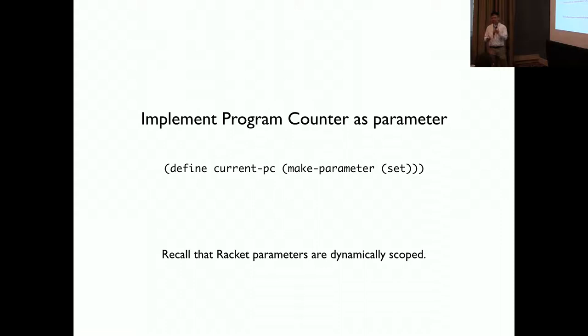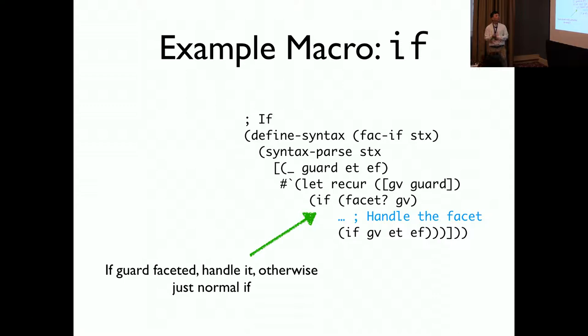We also implement program counter as a parameter. Basically, we parameterize the program counter so that it's dynamically scoped. Why is important and why the program counter is not statically scoped? It's because if the program counter is statically scoped, once we finish executing the function, we'll lose all the contents from the program counter. If we lose all the contents from the program counter, we cannot check if the label is in the program counter or not in order to proceed with the rest of the RACIS programs.